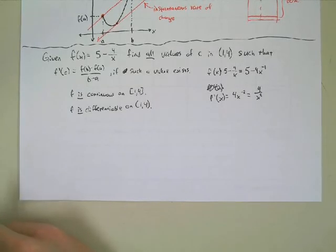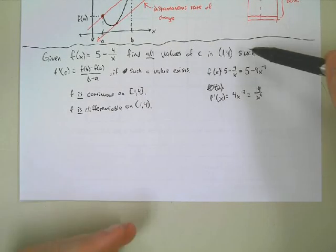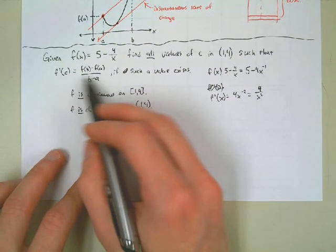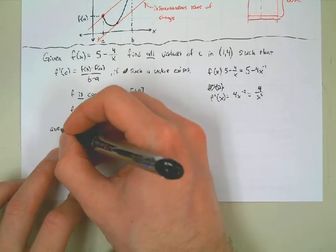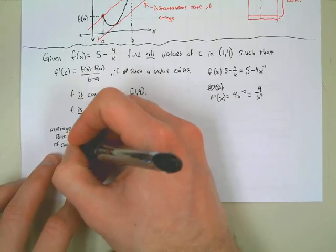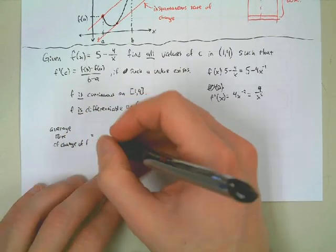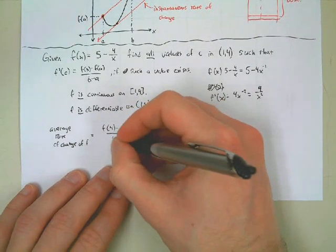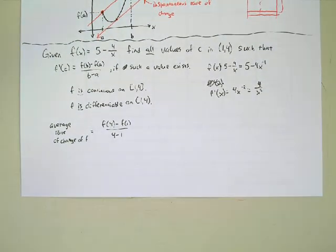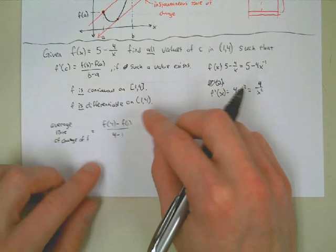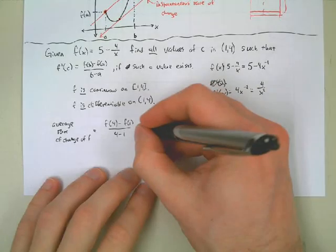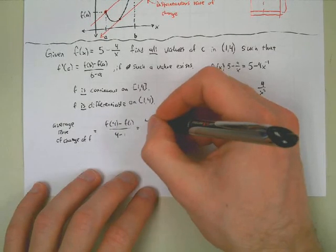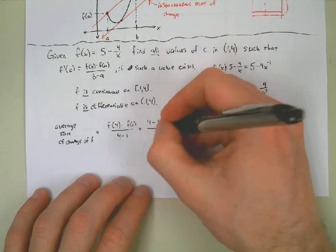Now we want to find all values of C in (1, 4) such that F prime of C equals the average rate of change. Let's find the average rate of change first. Average rate of change equals F(4) minus F(1) over 4 minus 1. F(4) = 4 and F(1) = 1, so we get 3 over 3 which is just 1.